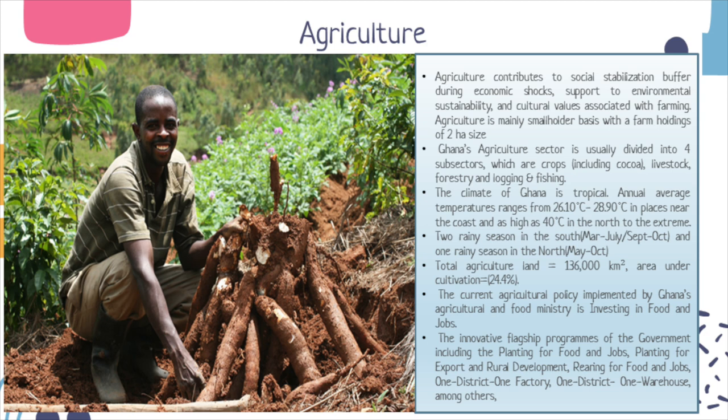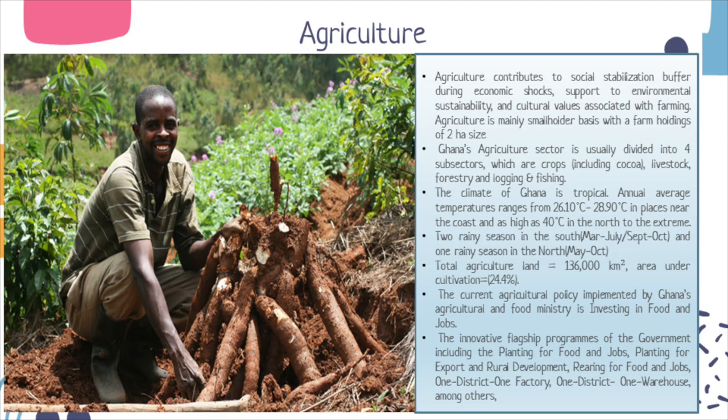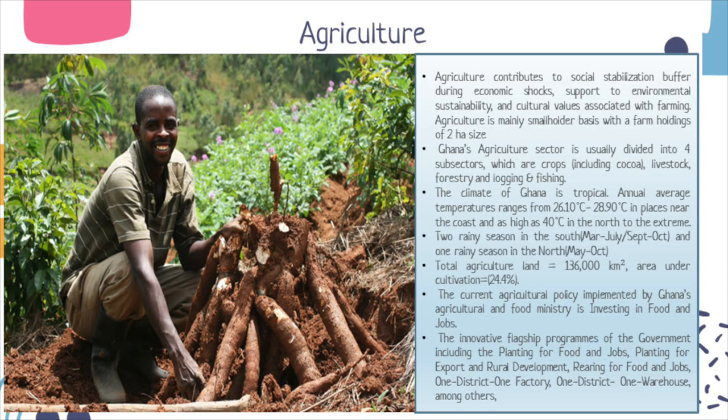Our temperature ranges from 26.1 to 28.9 degrees in places near the coast, and as high as 40 degrees in the northern part of Ghana. We have two rainy seasons in the south — March to July and September to October — and one rainy season in the north from May to October. The total agricultural land is 136,000 square kilometers, of which 24.4% is under utilization.